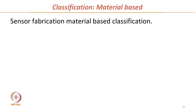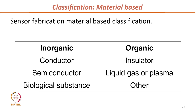Material-based classification uses the sensor fabrication material as the criterion. There are two types: inorganic and organic. Inorganic sensors use conductors such as metals, semiconductors such as silicon-based sensors, or biological substances. Organic sensors use insulators, liquids, gases, or plasma. This is classification based on the material used for sensor fabrication.